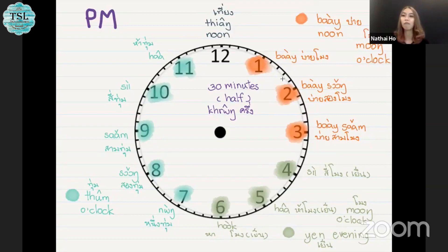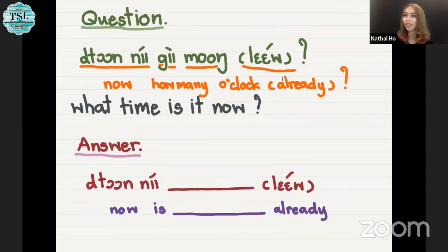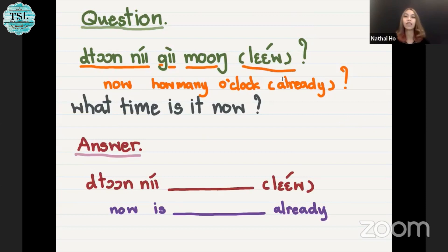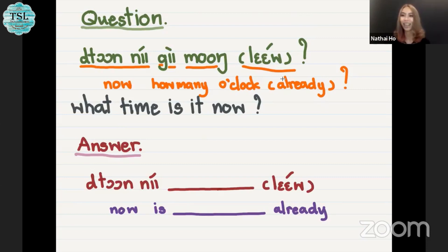After learning AM and PM, let's practice. To ask the question, we say ตอนนี้กี่โมงแล้ว? ตอนนี้ means now or right now. กี่ is the word to ask how many. โมง we learned before means o'clock. And แล้ว means already, but it's not necessary to add it. So when you want to ask 'what time is it now?' in Thai, you say ตอนนี้กี่โมงแล้ว?